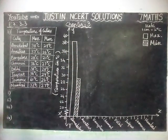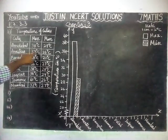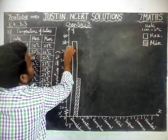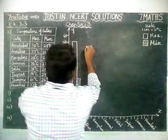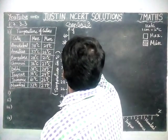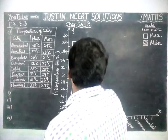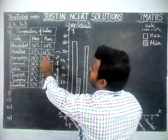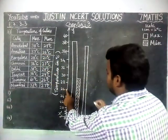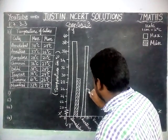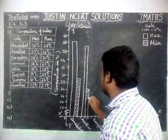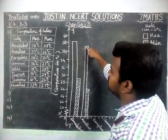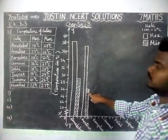Next we draw for Amritsar. Maximum temperature is 37°C. We have 36 and 38, so in between is 37. We draw the bar to 37. Minimum temperature is 26°C. To show the difference we use the cross line. Maximum temperature of Amritsar is 37°C and minimum temperature is 26°C.